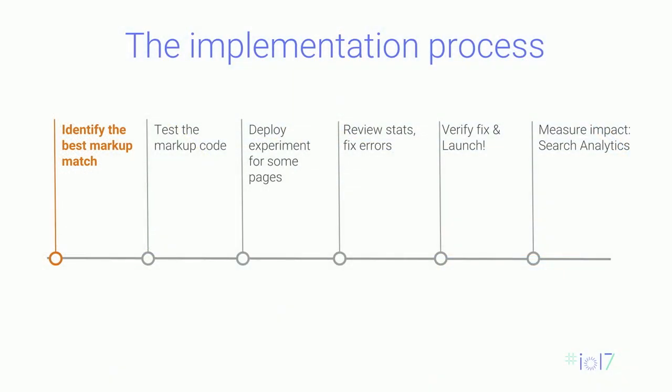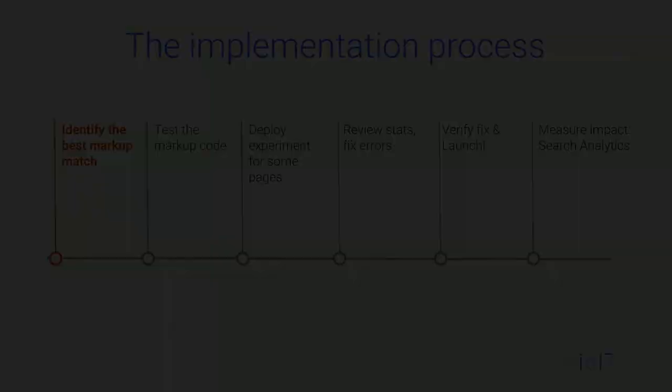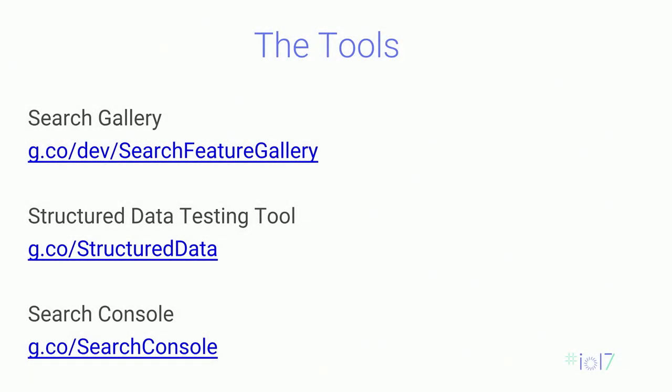This is the overall journey of the implementation process. The first step is identifying the best markup match. Throughout this journey there are three key tools: the Search Gallery, the Structured Data Testing Tool, and Search Console. These links are available to you — take a moment to try them out.